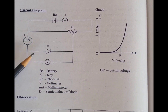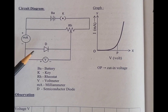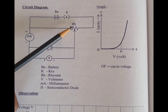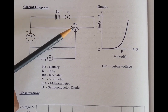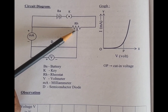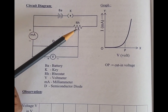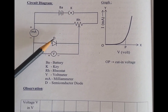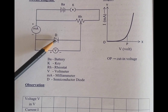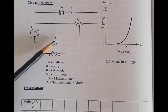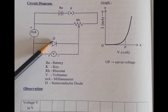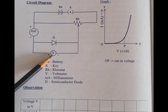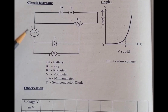This is the circuit diagram. The components are: a battery, a plug key, a rheostat — the arrow mark indicates the upper end of the rheostat — a milliammeter, D represents the diode (a semiconductor diode also called a PN junction diode), and V represents the voltmeter.